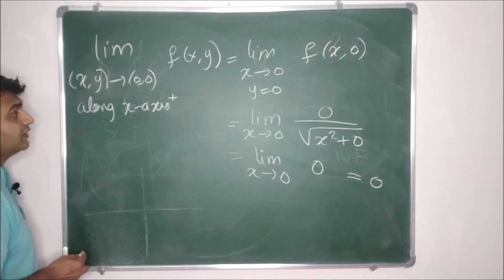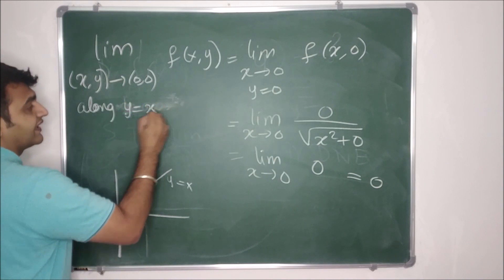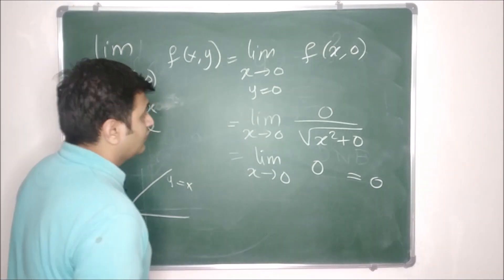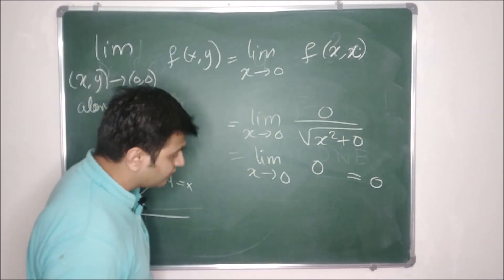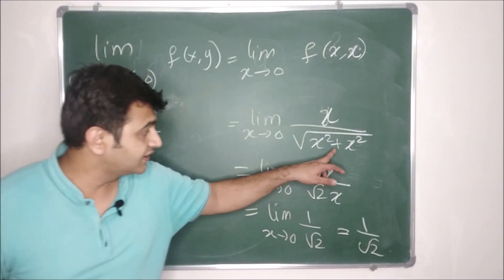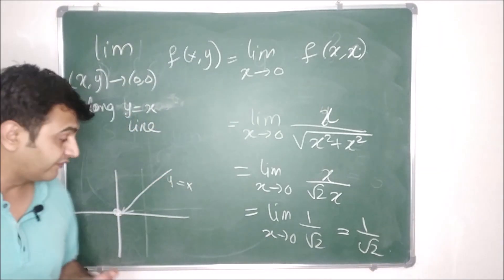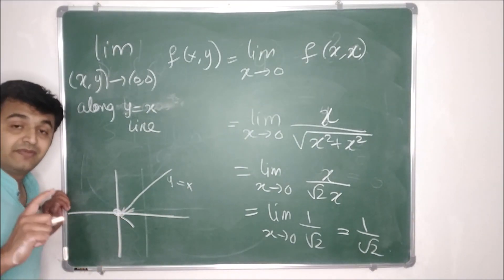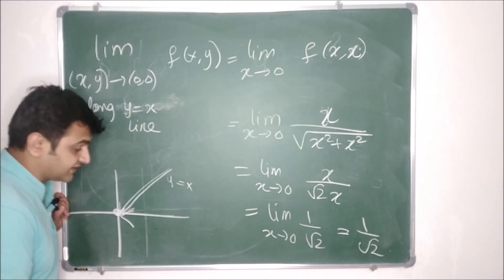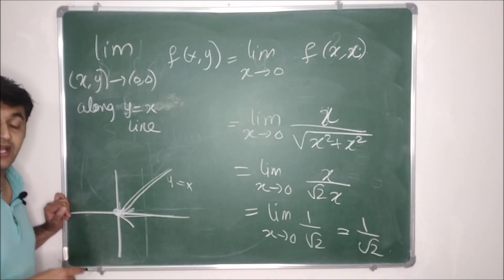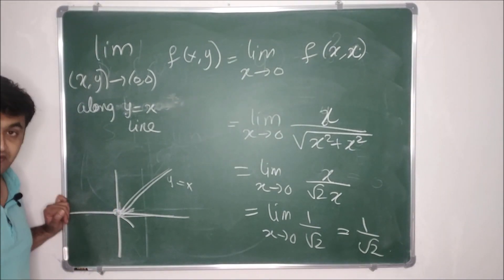Now let's approach along the line y = x. Along y = x, we compute f(x, x) = x / √(x² + x²) = x / (x√2) = 1/√2. The limit of a constant is the constant itself, so approaching along y = x gives 1/√2. Since approaching along the x-axis gives 0 and approaching along y = x gives 1/√2, these are different, so the limit as (x, y) → (0, 0) does not exist.